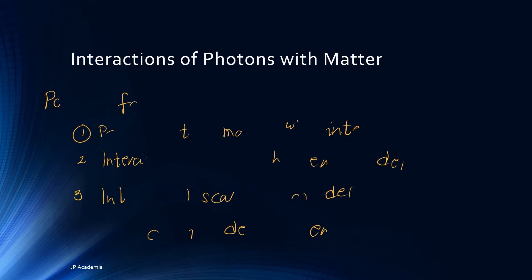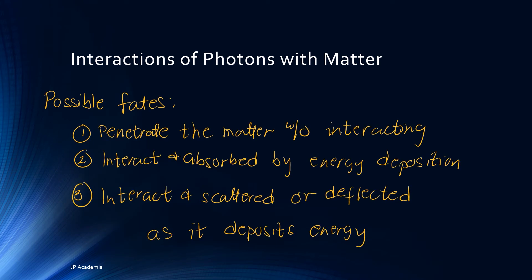We can have three general statements for the possible fate of a photon during its interaction with matter. First, it penetrates the matter without interacting — this can be Rayleigh scattering. Second, it interacts and is absorbed by energy deposition; one example is the photoelectric effect. Third, it may interact and scatter or get deflected as it deposits energy — this can be the Compton effect or Compton scattering. For this introduction video, I will introduce the three most important interactions of photons: specifically the photoelectric effect, Compton scattering, and pair production.